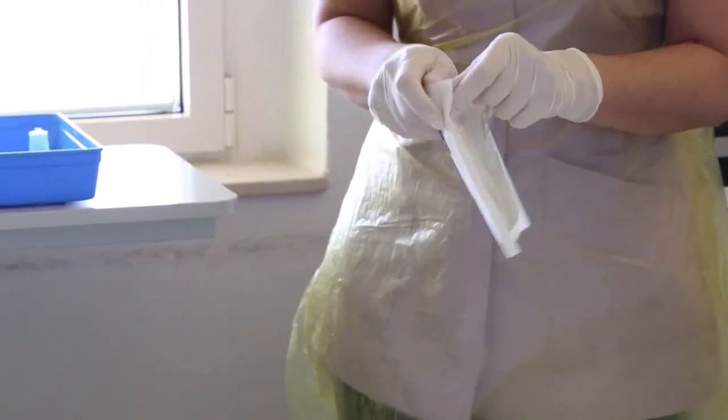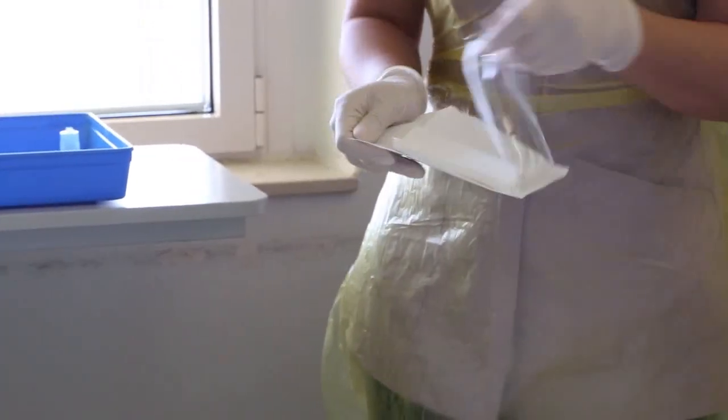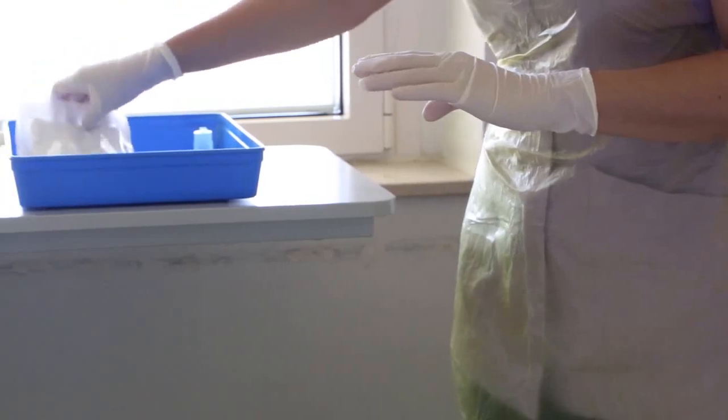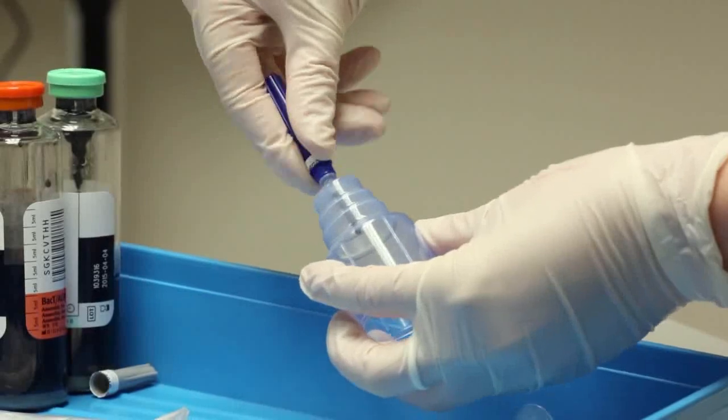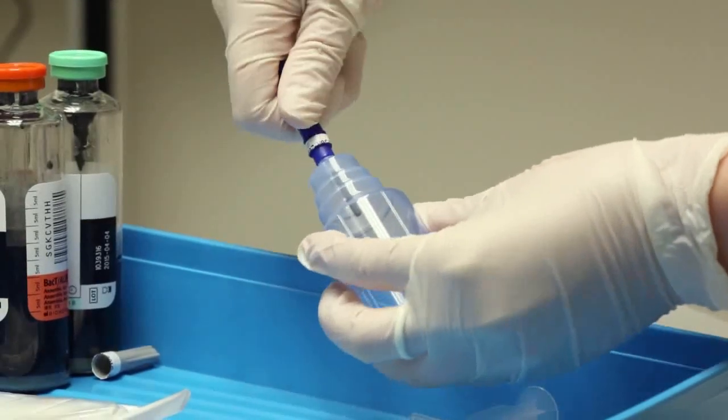Open the gauze swab package as shown and without touching the swabs, place it back in the tray. Attach the blue vacutainer needle to the blood culture vacutainer and place it back in the tray, leaving it covered to maintain a sterile connection point.